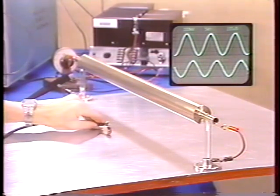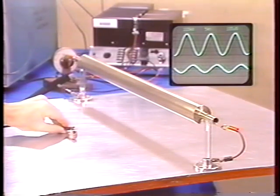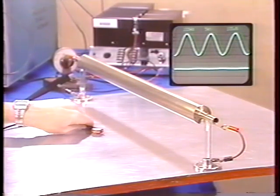At high frequency, the current distributes itself in the sheet in just such a way as to make the normal flux density near zero.